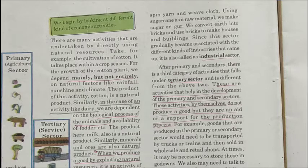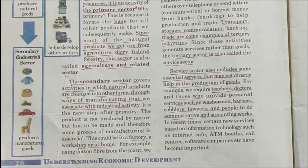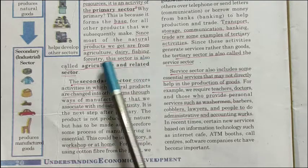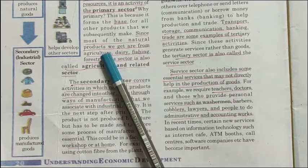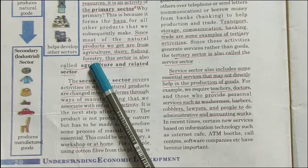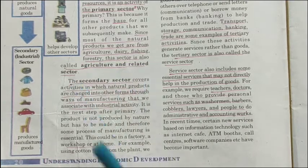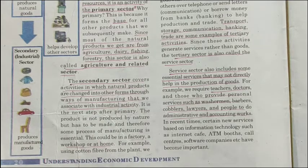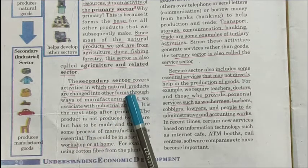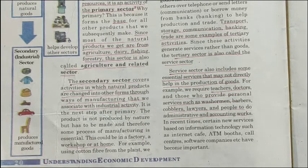The primary sector is also called the agricultural sector, since most of the natural products we get are from agriculture, dairy, fishing, and forestry. This sector is also called the agriculture and related sector.